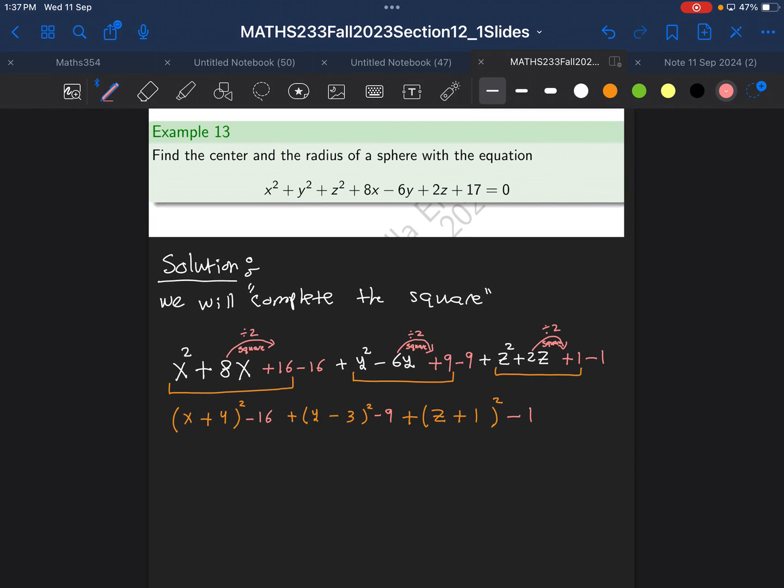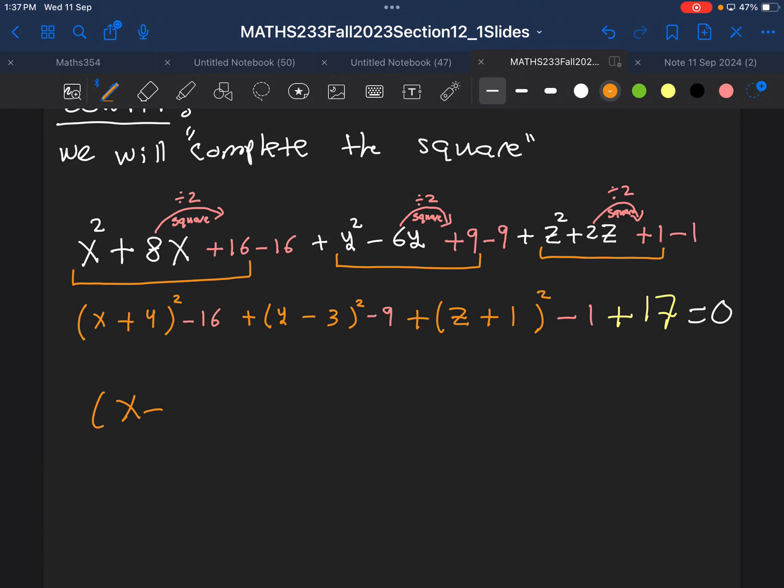And that will take care of all the z's. Remember, in the original question, there is a number alone, which is 17. I keep it as is plus 17. Now, all what you need to do is keep the squares and take all the numbers to the other side. With your calculator, find the number and take it to the other side. What you are going to get is (x + 4)² + (y - 3)² + (z + 1)². And that's all should equal to, if you take everything to the other side, that will be 9.